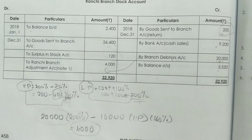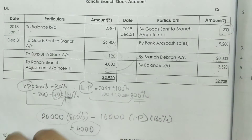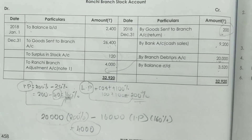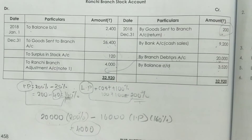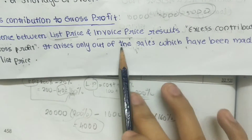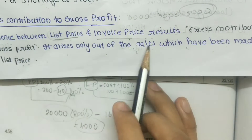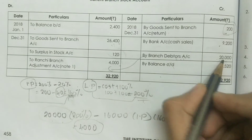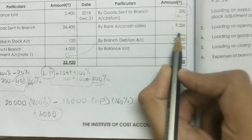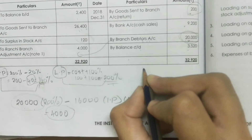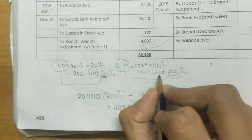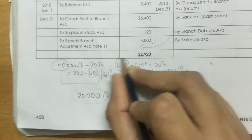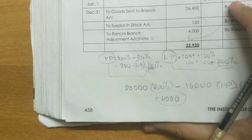Now for the adjustments: excess contribution to gross profit arises from credit sales only, because credit sales are made at list price. The credit sales amount is 20,000, which is at list price. List price percentage is 200% (cost plus 100%), and invoice price percentage is 160%. We need to convert the credit sales from list price to invoice price: 20,000 ÷ 200 × 160 = 16,000.